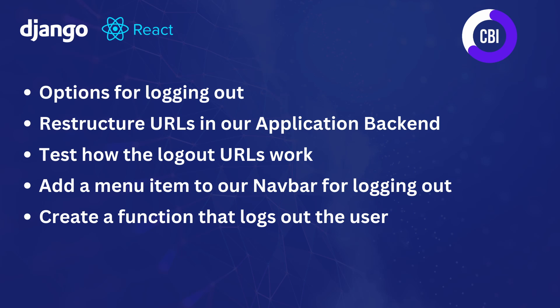To realize this functionality, we're going to focus on five main steps. First, we'll discuss the different options for logging out, because there are multiple ways to do it and multiple APIs from Django REST Knox. Next, we'll slightly restructure the URLs in our backend. Then we'll add a menu item to our navigation menu. And finally, we'll create a function that logs out the user and deletes the token from both local storage and our backend database.